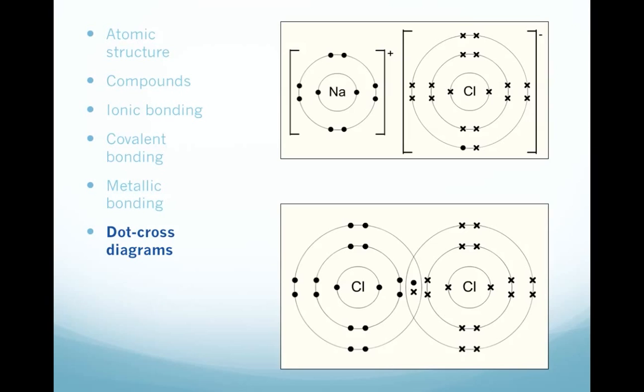Similarly, the covalent bond between the two chlorine atoms is shown by an overlapping orbital. And the shared electrons are drawn within the overlapping area. So, if you're asked to draw a dot-cross diagram, you should draw it something like that.